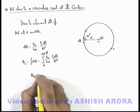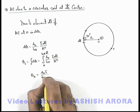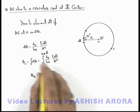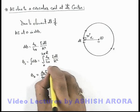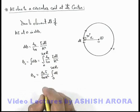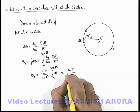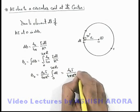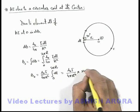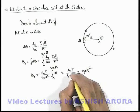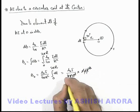So here magnetic induction at point O we can write as μ₀i/4πr² which is constant, we can take out of the integral sign. It is integration of dl from zero to 2πr, which we are getting μ₀i/4πr² multiplied by 2πr. Here π gets cancelled out, r also gets cancelled out, 2 will also be cancelled.